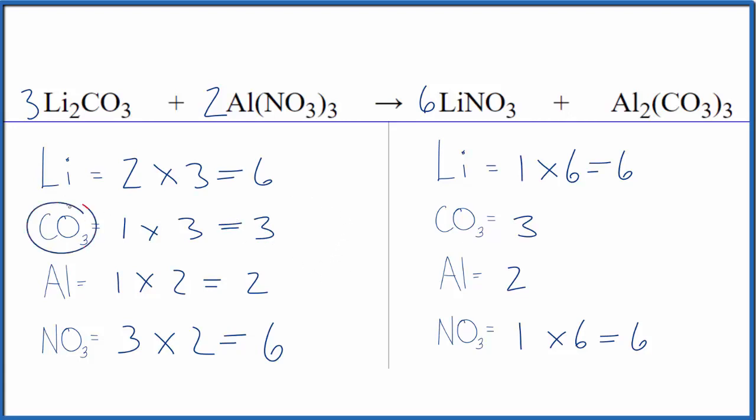So when you count these polyatomic ions as one thing, as long as they're on both sides, that's very helpful. And here I've balanced the aluminums first because that gave me all of those nitrates, which then I could get balanced later in the equation. Either way you do it, you'll get the same answer. This way, just a little bit easier.